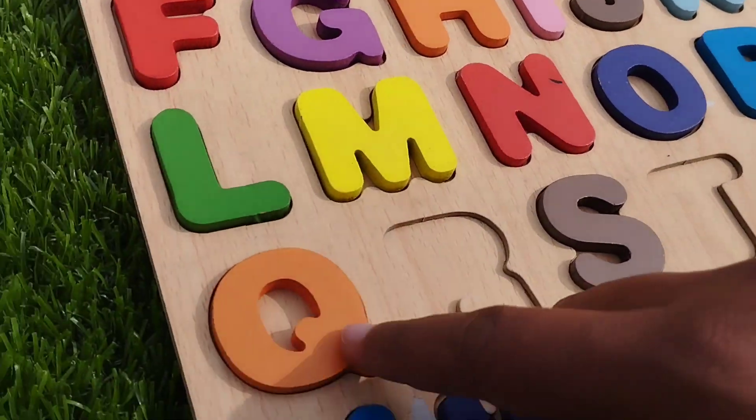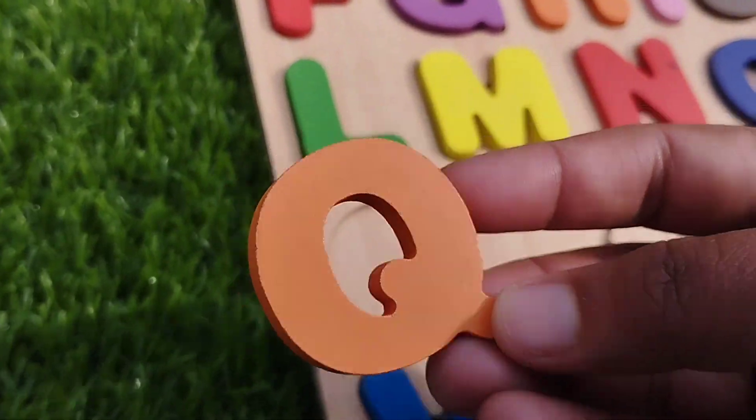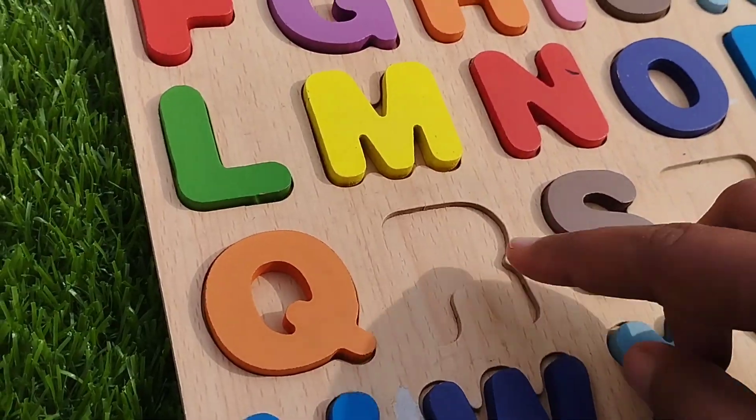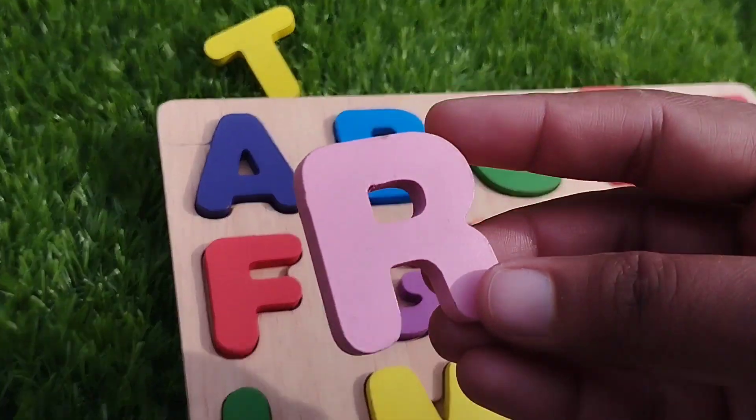P for parrot. Q for quail. The next letter is letter R.